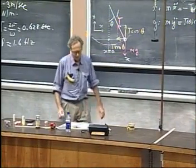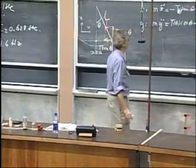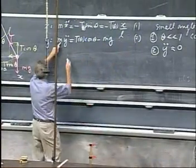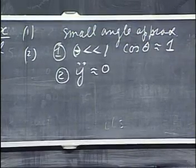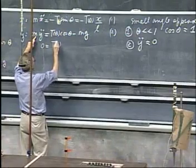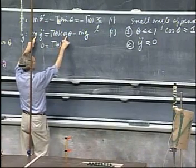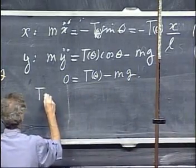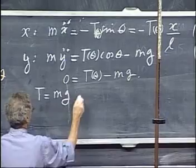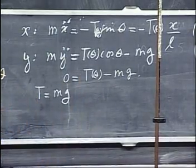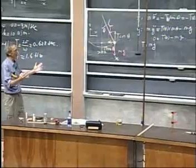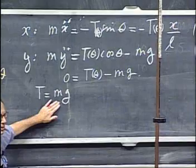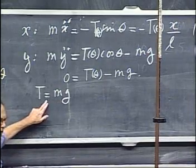With these two conclusions, which follow from the small angle approximation, I go back to my equation number two. And I find that zero equals T, which could be a function of theta. The cosine of theta is one minus mg. So I find that T equals mg. Notice it's no longer even a function of theta. So I simply have, in my small angle approximation, that I can make T the same as mg.